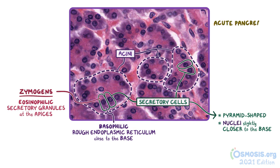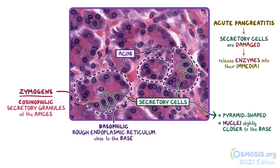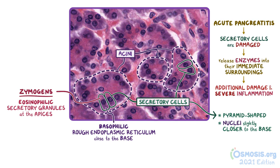In acute pancreatitis, it's the exocrine secretory cells that are damaged and end up releasing their enzymes into the immediate surroundings. These strong digestive enzymes cause additional damage to the pancreatic tissue that leads to severe inflammation as well.